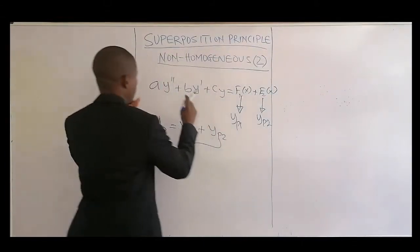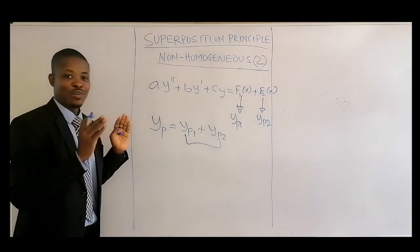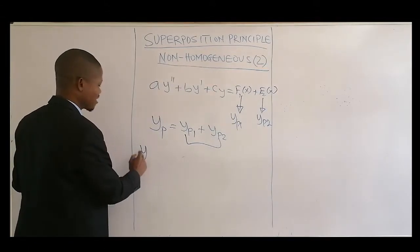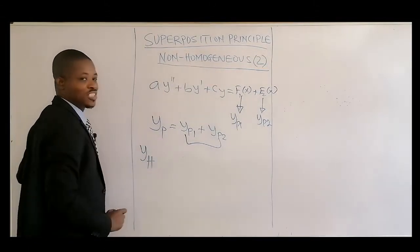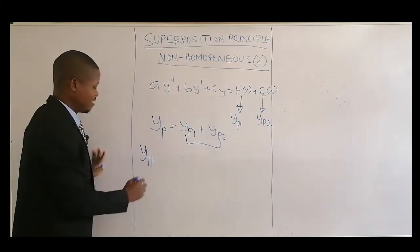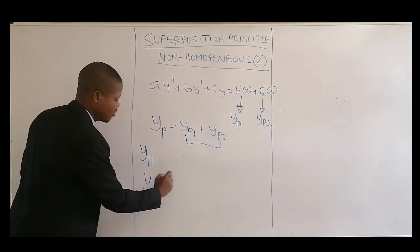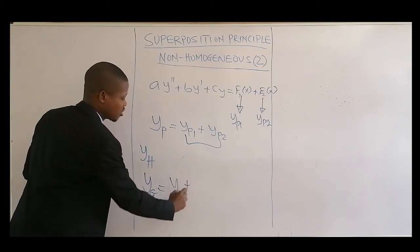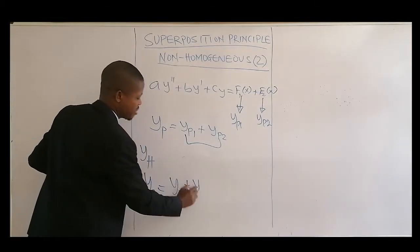Then don't forget also, before you can get the particular solution, you must also get the YH. Get the homogeneous part of that differential equation. Then the general solution will now become this plus YP.